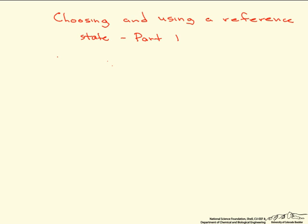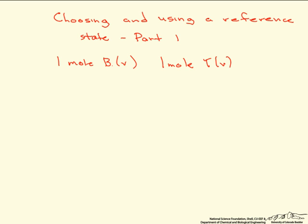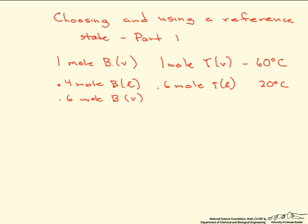So if we have one mole of benzene vapor and one mole of toluene vapor coming in at 60 degrees C and it exits in a liquid vapor form at 20 degrees C. You have one mole of liquid that is 40% benzene, so 0.4 moles of benzene liquid, 0.6 moles of toluene liquid, and vapor that is 60% benzene, so 0.6 moles of benzene vapor and 0.4 moles of toluene vapor coming out, all at 20 degrees C.